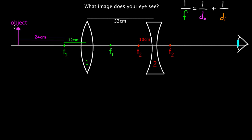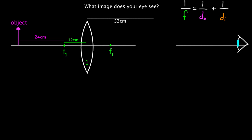So the object gets turned into an image from the first lens, then the second lens turns that image into another image, and that's what our eye is gonna see. The question we want to answer is: what image would our eye see if we had it over here looking through these two lenses? So let's do this. First thing we gotta do — we're gonna pretend like the second lens doesn't exist so it doesn't confuse us. We use the thin lens equation.